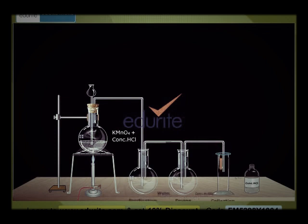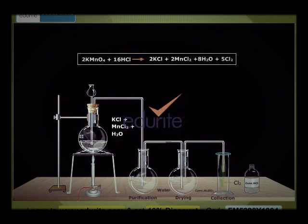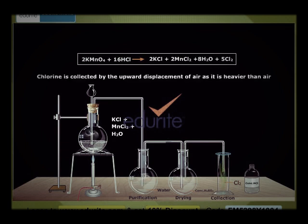Water purifies the gas while concentrated sulfuric acid is a drying agent. The products of the reaction are water and chlorides of potassium and manganese. These are left behind in the round bottom flask. Chlorine is collected by the upward displacement of air as it is heavier than air.